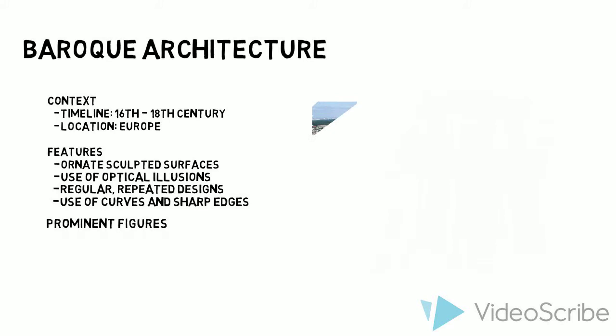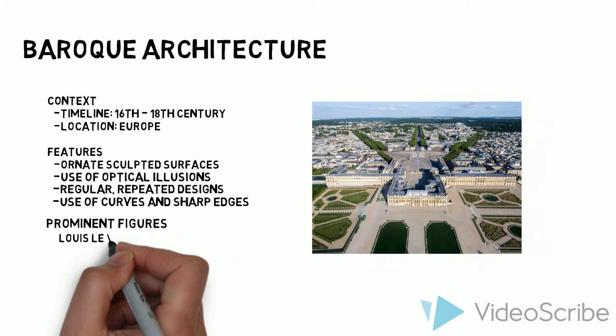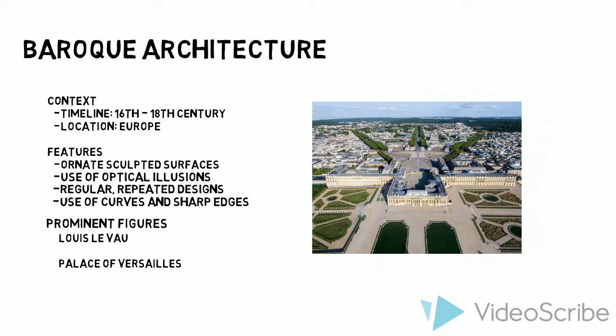Now this is the Palace of Versailles, located in France. Louis Levin was the main architect. This structure is often seen as a cornerstone piece in Baroque style, due to its lavish exterior features that are replicated throughout the entire building.